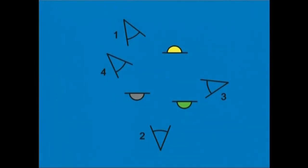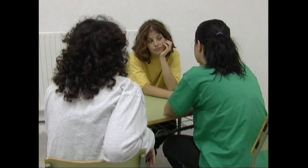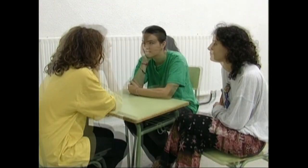Horiz jantzitakoa hartzeko, bat kokagunera itzuli beharko dugu. Lau kokagune hauetatik hartutako planoak muntatzeko, orden hau jarraituko dugu: bat, bi, bat, iru, lau, iru.